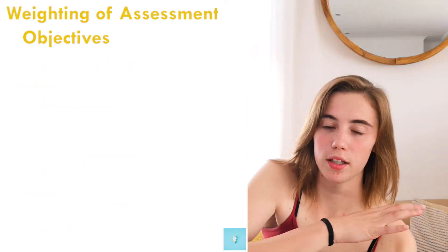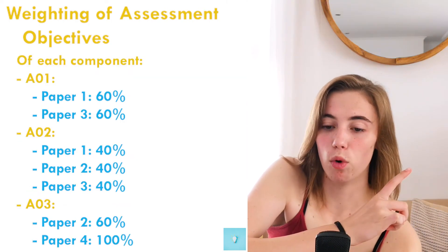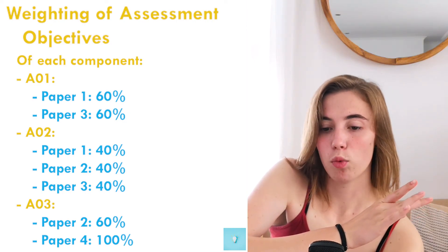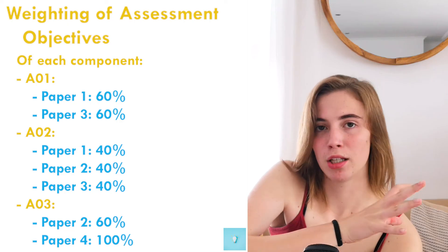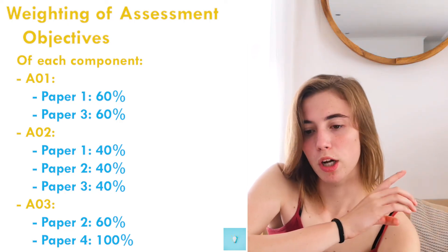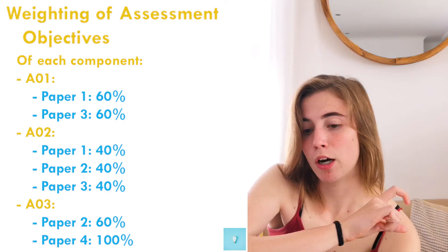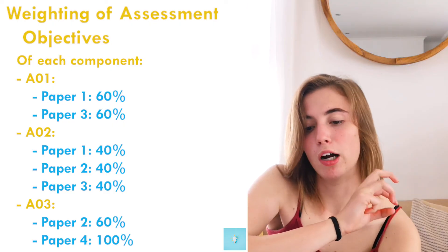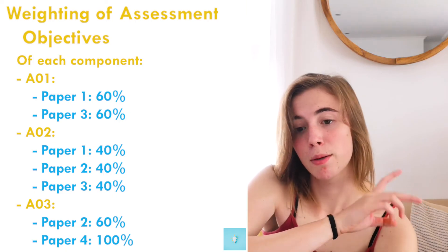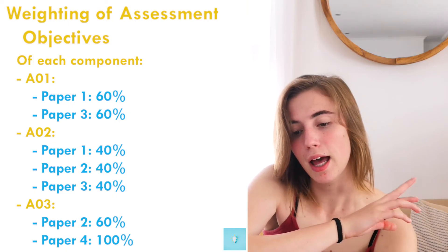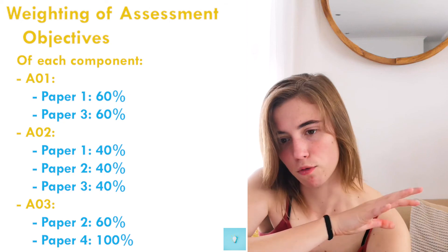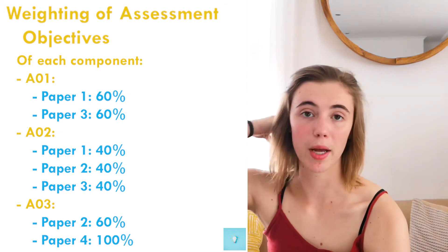Looking at the per-paper weighting: AO1 counts for 60% in paper one and 16% in paper three. AO2 counts for 40% in paper one, 40% in paper two, and 40% in paper three. AO3 counts for 60% in paper two and 100% in paper four — meaning paper four is entirely assessed on objective three, the further programming paper.